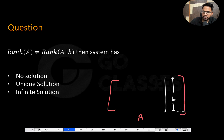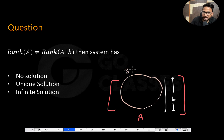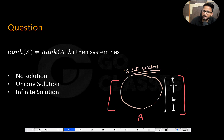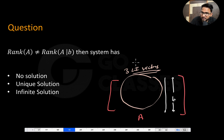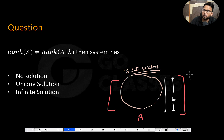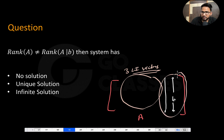Suppose in A you have three linearly independent vectors. Now suppose you bring one more vector b. What's going to happen? Either b is linearly dependent on these three vectors — that is, b is a linear combination of these three vectors — or b is a completely new vector. If b is completely new, then bringing it in is adding something.